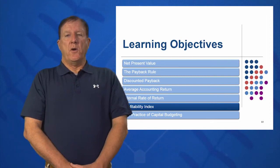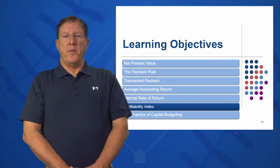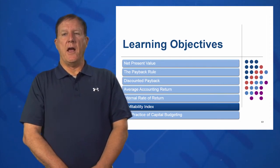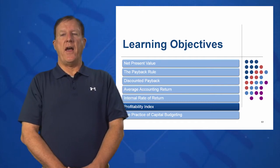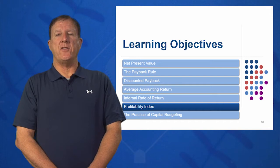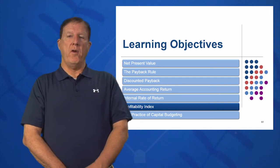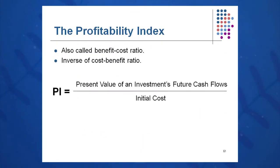In learning objective six, we're going to look at profitability index. Heavily used in governmental and nonprofit organizations, it's the present value of the cash inflows divided by the cash outflow, or the benefit-to-cost ratio. This is similar to the NPV, also called the benefit-to-cost ratio — you're familiar in econ with the cost-benefit ratio. Here we're going to invert that and make it the benefit-to-cost ratio: present value of the cash inflows divided by the initial cash outflow.